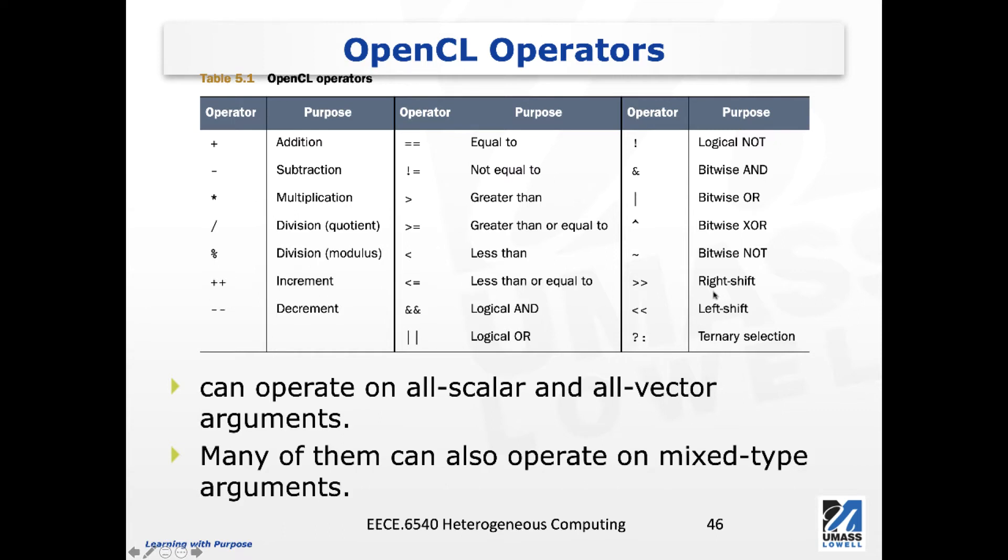Also, we have operators for left shift or right shift. This ternary selection is also the same as we saw in high-level languages. Basically, we first check certain condition, and we have two arguments followed. One before the colon is chosen if the condition is true. Otherwise, the final argument will be chosen.